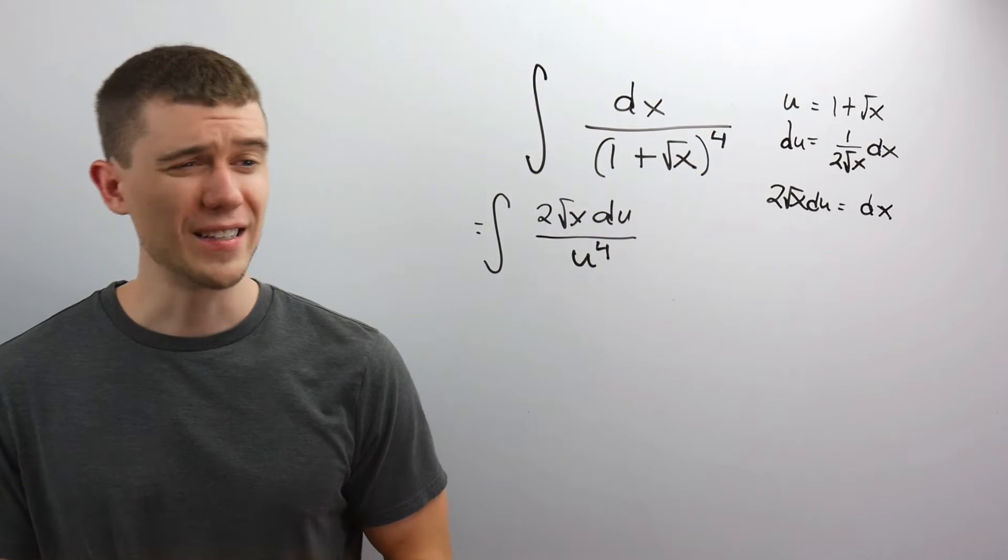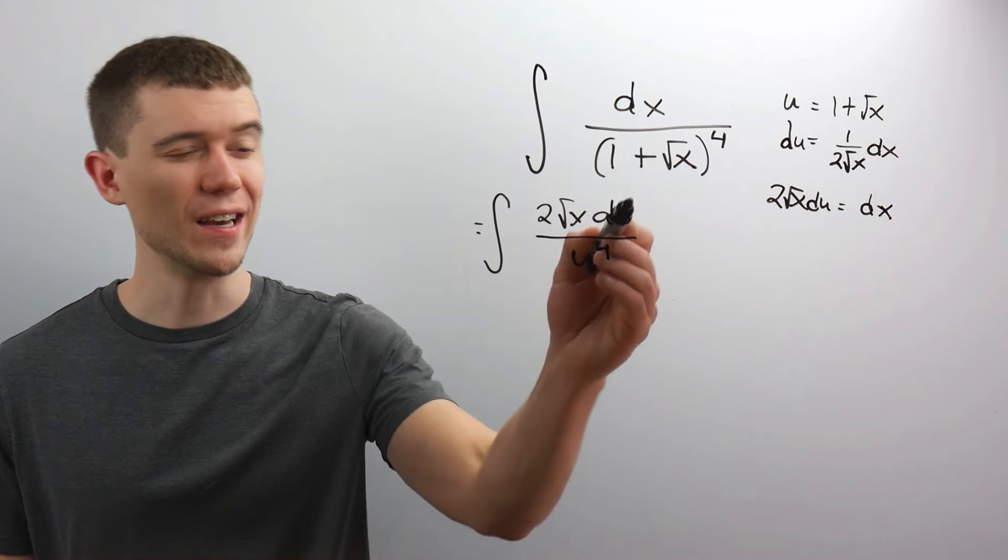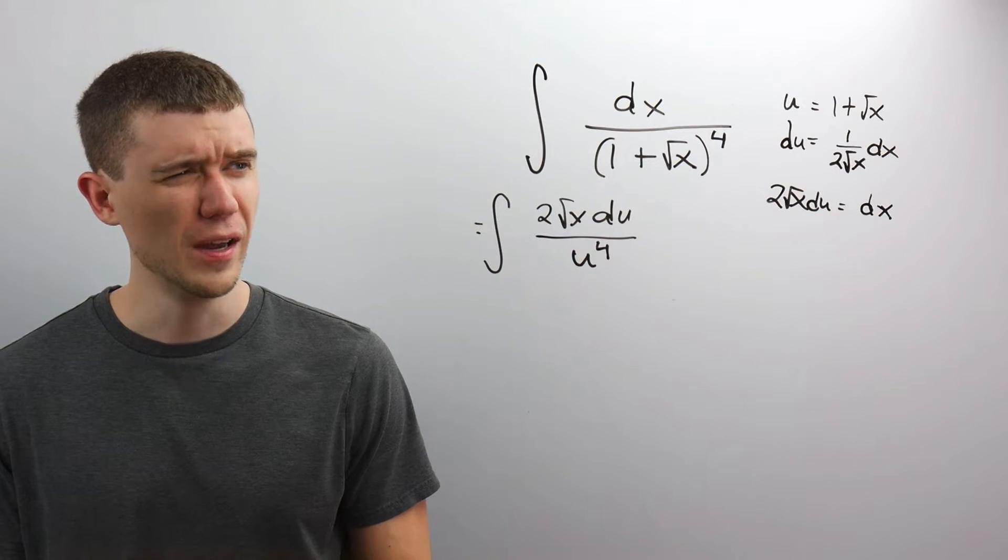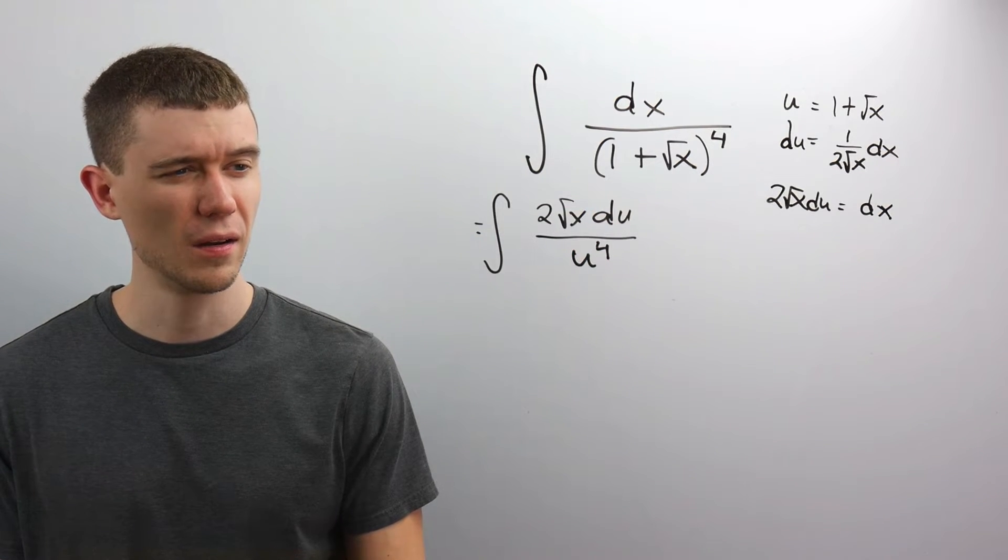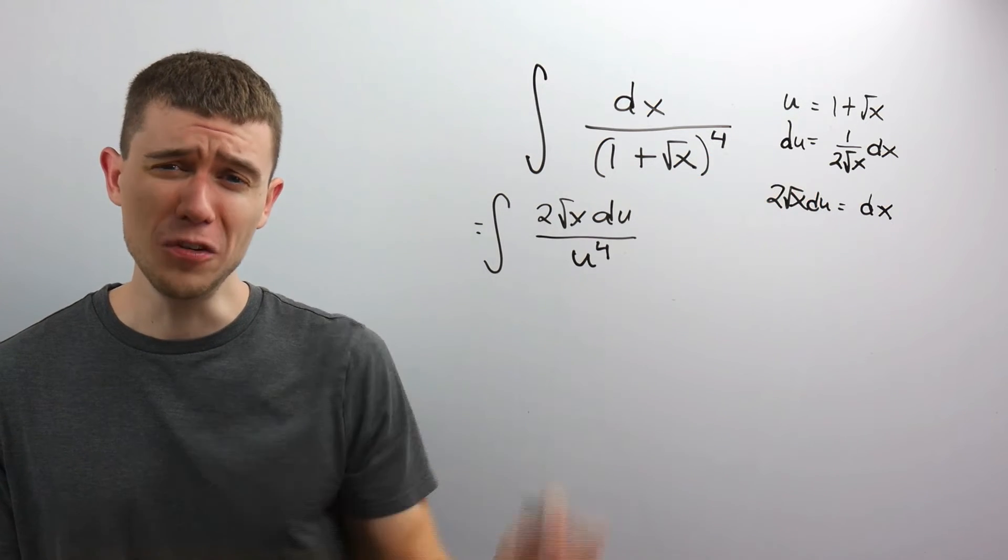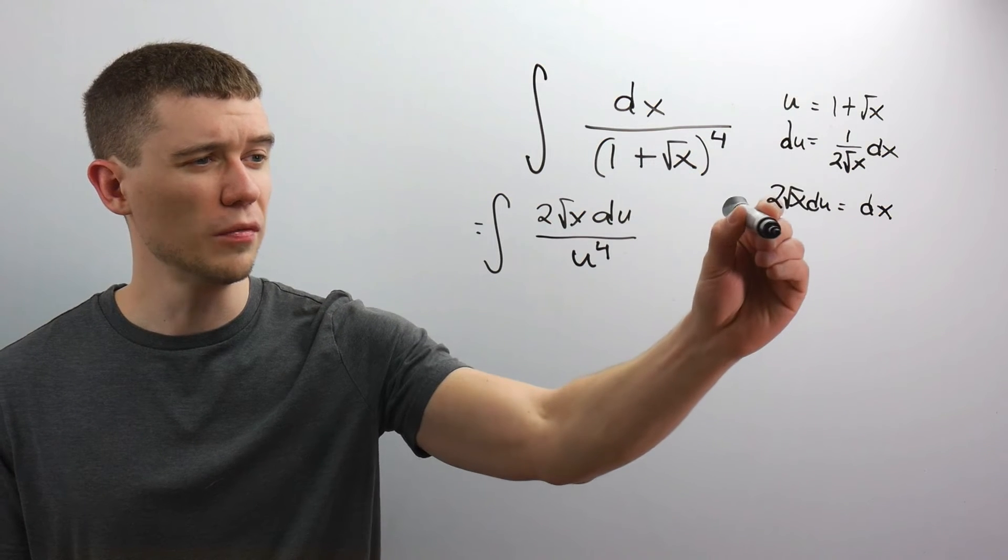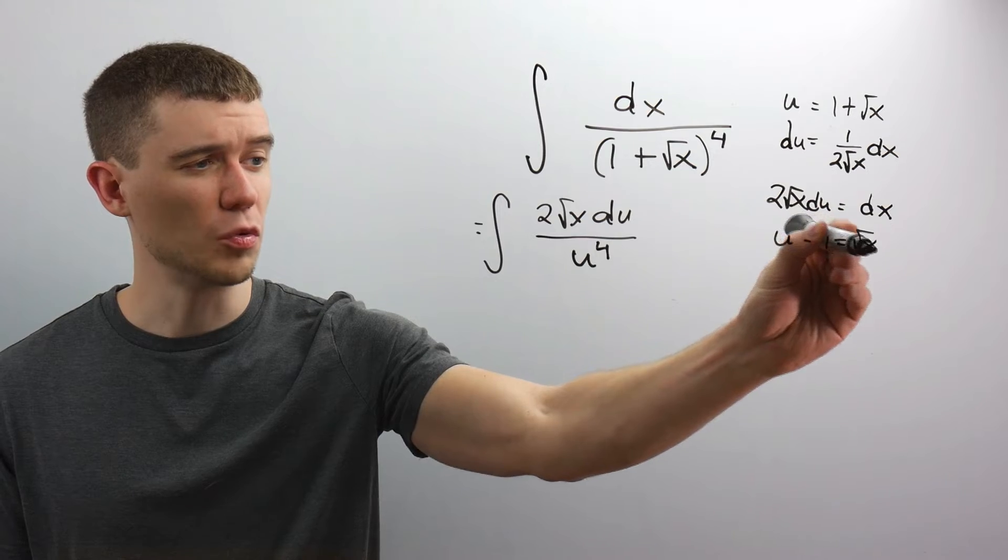Well, this would be great, except we have x's still. I can't integrate x's if this says du. How do I figure out what root x is? I have this dangling root x out here. Well, hold on. There's a root x right here. I know what root x is. I'll just solve for it. Just subtract 1 from both sides. u minus 1 is root x.